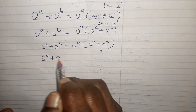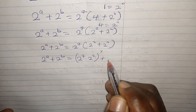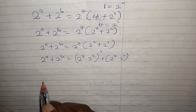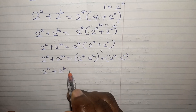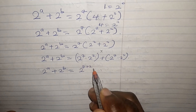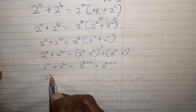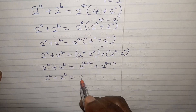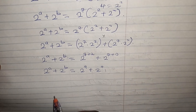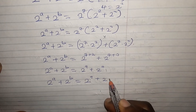Opening the brackets, we get 2^7 × 2^2 plus 2^7 × 2^0. Applying the indices rule, 2^7 × 2^2 = 2^(7+2) = 2^9, and 2^7 × 2^0 = 2^(7+0) = 2^7. So we now have: 2^a + 2^b = 2^9 + 2^7.